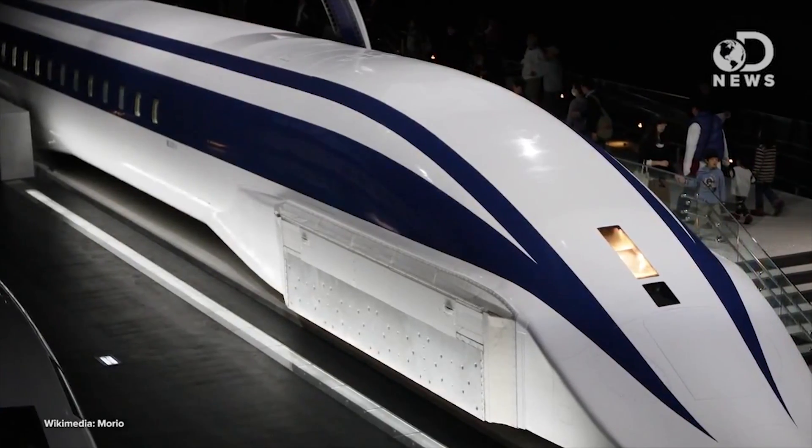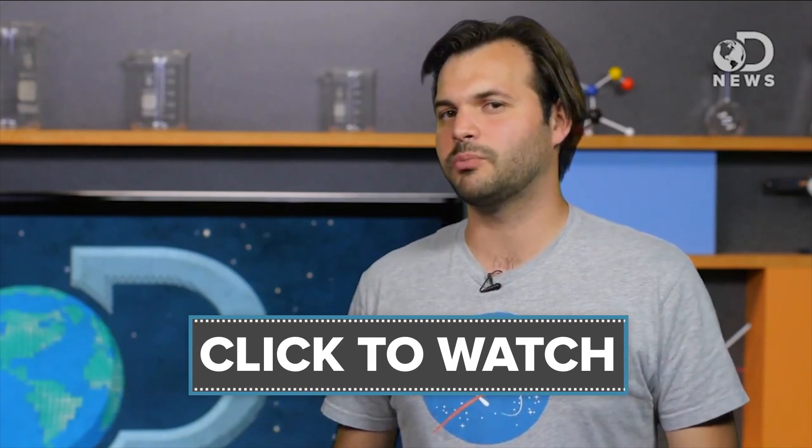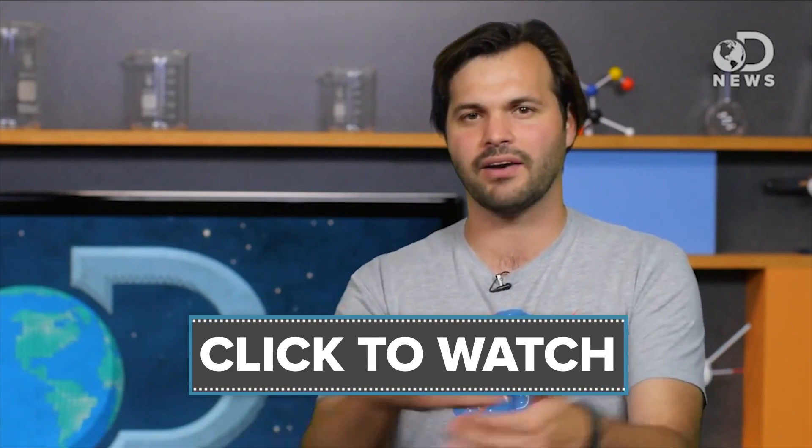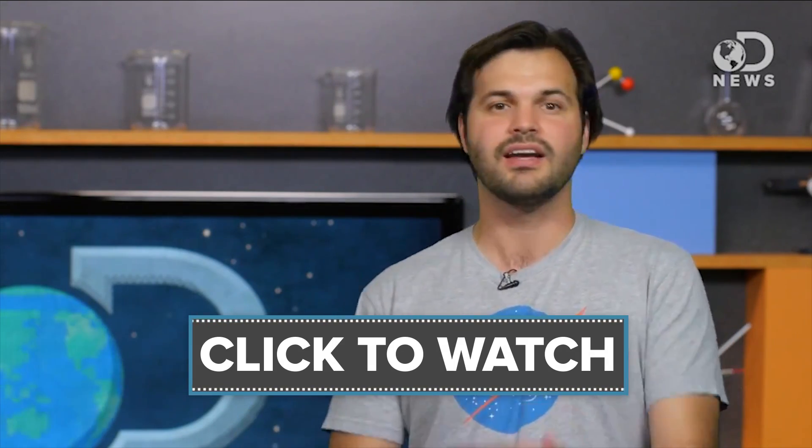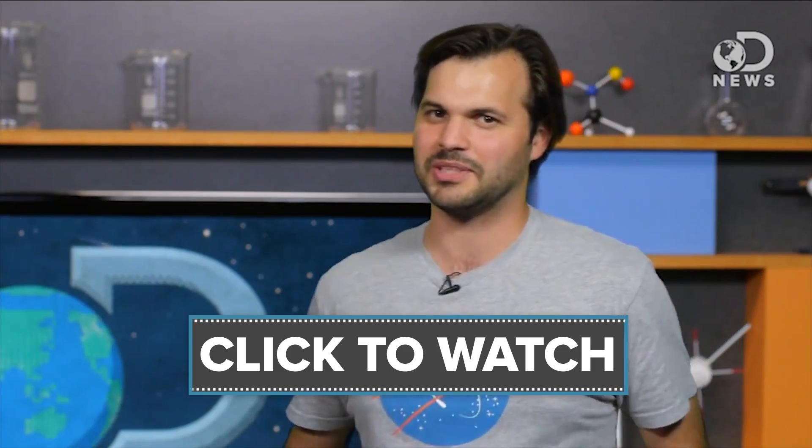Magnetic levitation can be scaled up too, and because the only friction is from air, that means you can get going pretty fast. Trace talks about maglev trains here. Using superconducting electromagnets arranged in a figure 8 pattern, the train floats above the track, though it has rubber wheels for slower speeds.